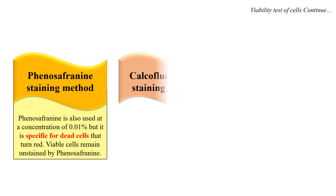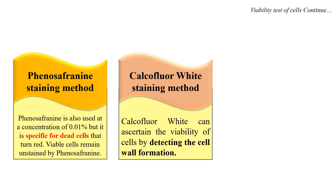The next is the calcofluor white staining method. Calcofluor white ascertains the viability of cells by detecting cell wall formation. If there is formation of a new cell wall, it will appear white due to calcofluor white. Only living cells have the capability to grow a new cell wall, so if cell wall formation is detected, that cell or part of the cell is in a viable or living state. The formation of new cell wall is detected by the calcofluor white staining method.